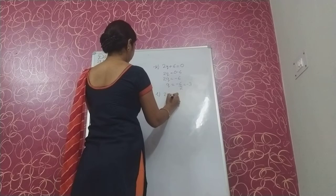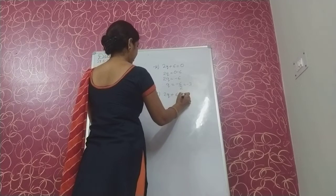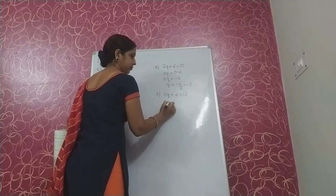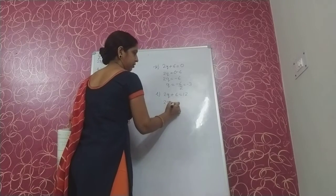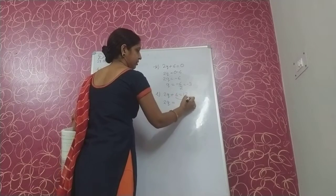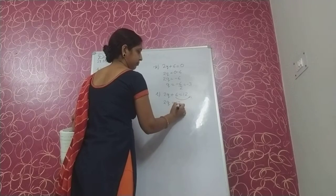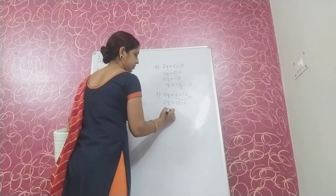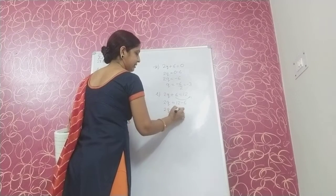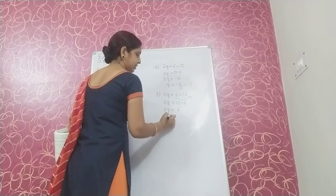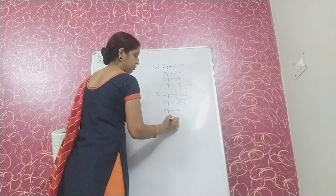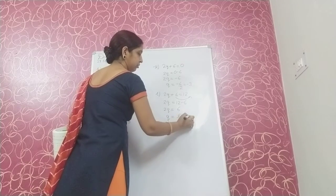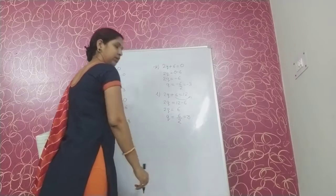Next, 2Q plus 6 is equal to 12. Transpose plus 6 to the right side — it becomes minus 6. So 12 minus 6 is 6. So Q equal to 6 upon 2, that is 3.